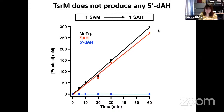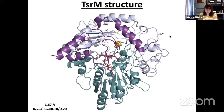That raises the question: how does TSRM catalyze the methylation of tryptophan? We did many different approaches to characterize it, but sometimes it's best to get a real inside look. So we started structural characterization studies, and I was able to solve the crystal structure of TSRM to 1.67 angstroms. This is the first cobalamin-dependent radical SAM methylase structure.